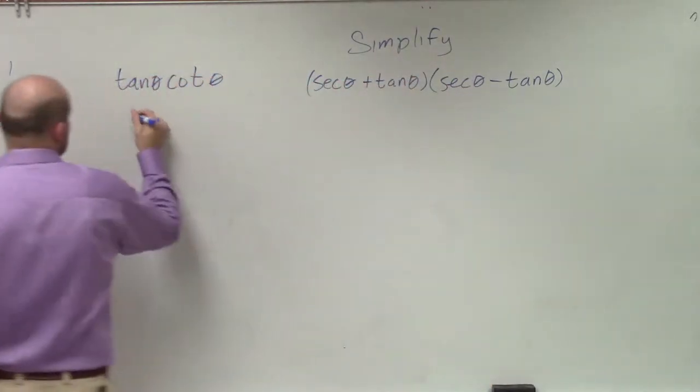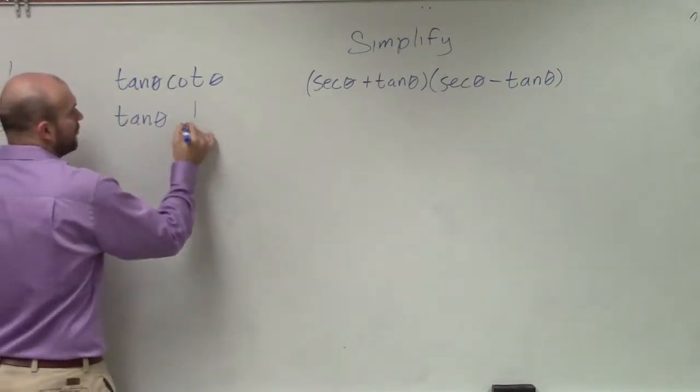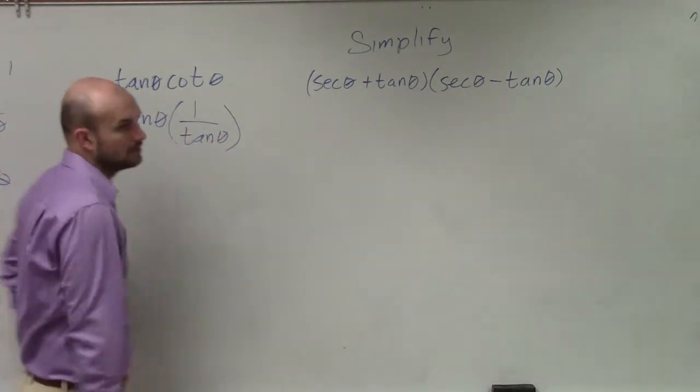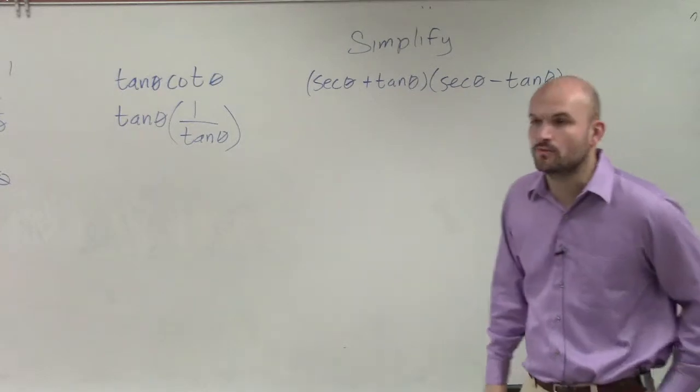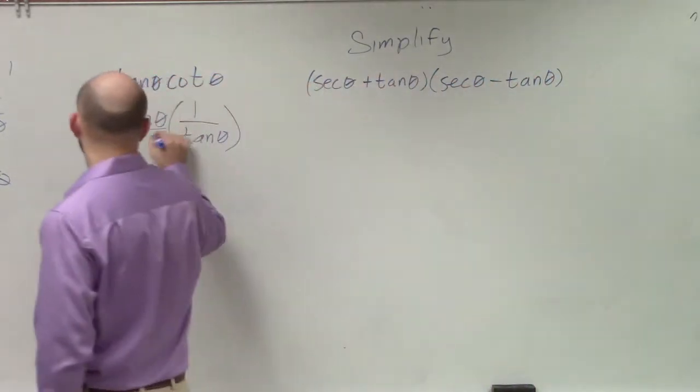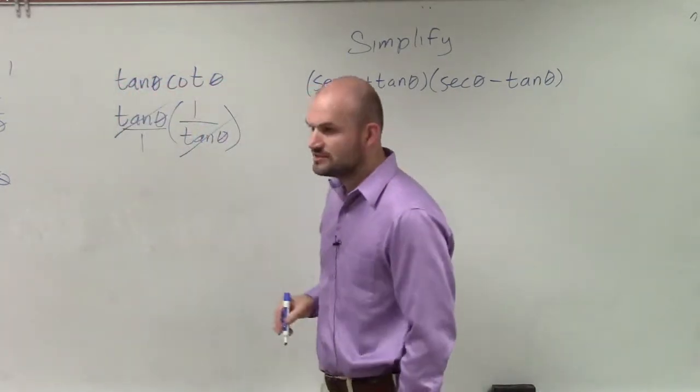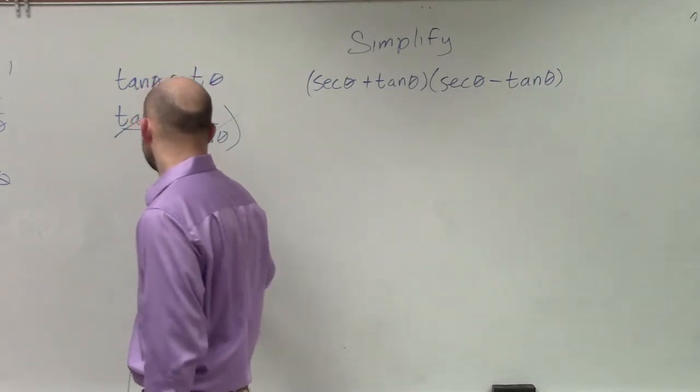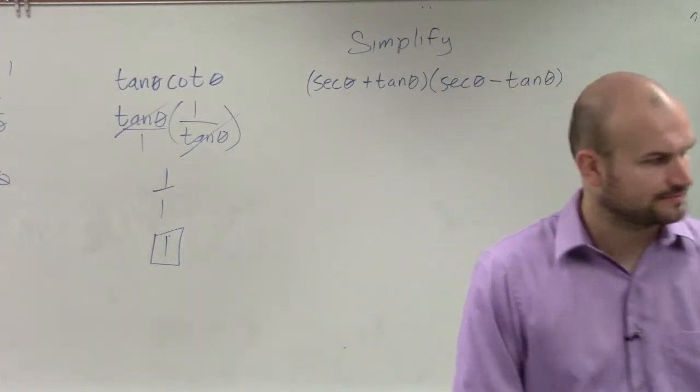Let's rewrite cotangent as 1 over tangent of theta. By doing that, and now multiplying these, that's tangent over 1. My tangents divide to 1, and I'm left with 1 over 1, which equals 1. So that would be my final simplified version.